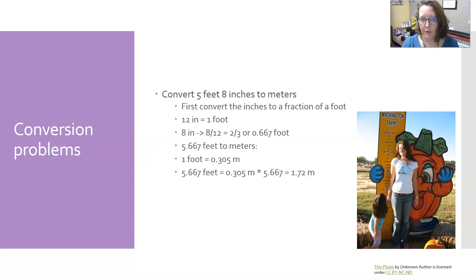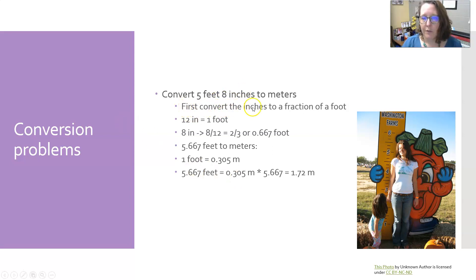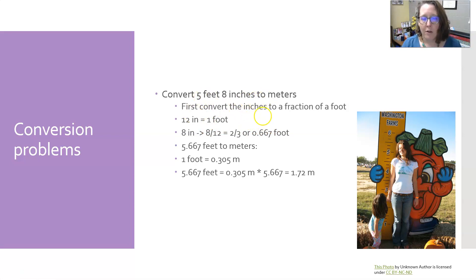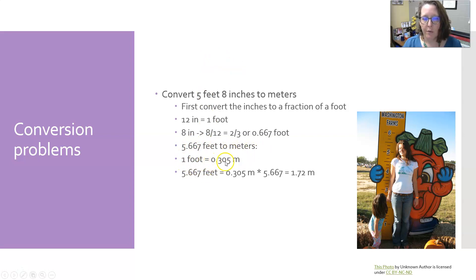You may also need to convert height into meters or centimeters. First, convert inches to a fraction of a foot so you're working in the same unit. Since 12 inches is one foot, if you have five foot eight inches, the eight inches is eight-twelfths of a foot, or two-thirds, or 0.667 of a foot.